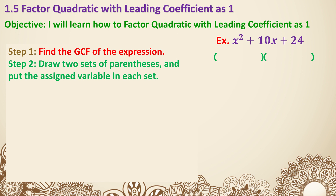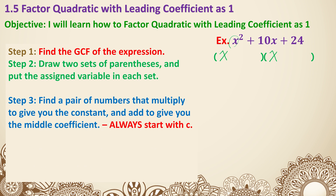We're going to draw two sets of parentheses and put the assigned variable in each set. In this case, it's x squared, so I'm putting an x in each one. The reason it says 'assigned variable' is that sometimes it could be m, n, s, or whatever letter is used. Next, we need to find a pair of numbers that multiply to give the constant — the number in the back — and add to give the middle coefficient. We typically start with c because there are limited options when two numbers multiply to give a certain number, whereas with addition, like 30, you'd have many options.